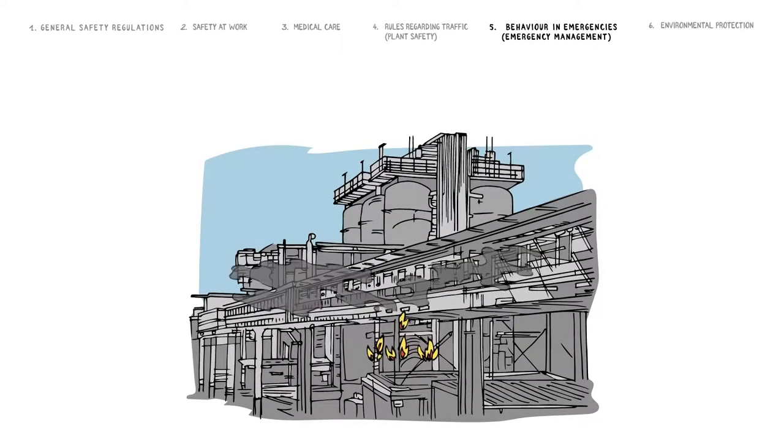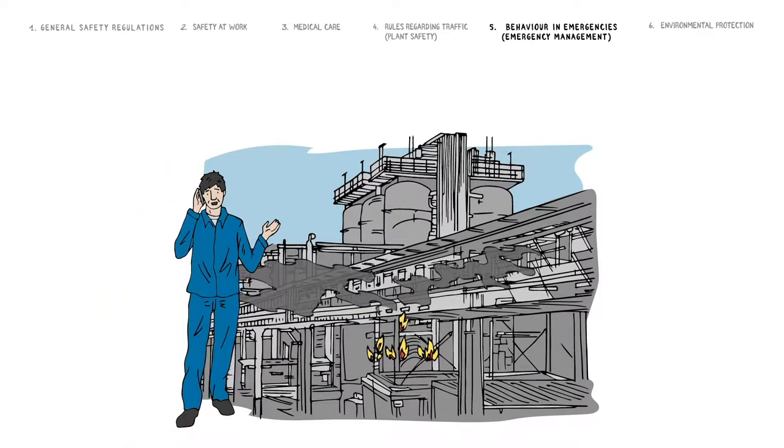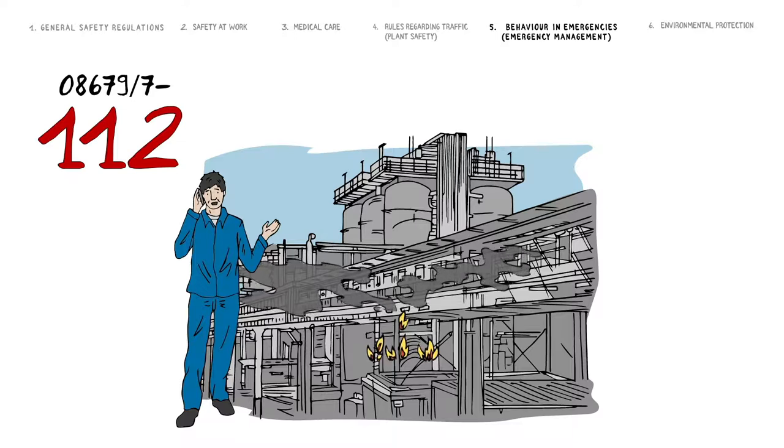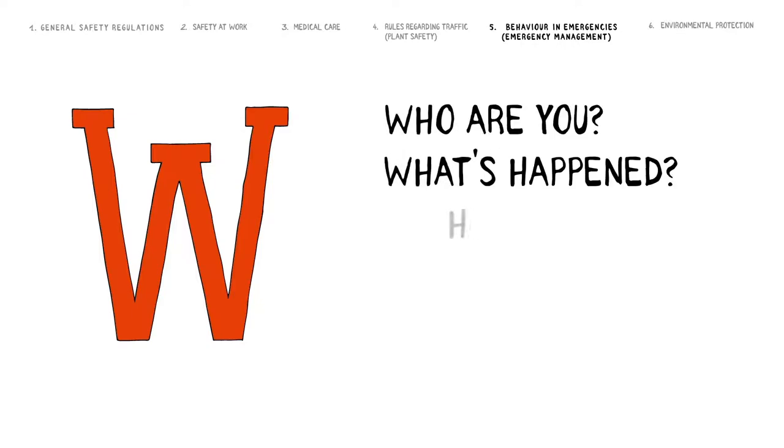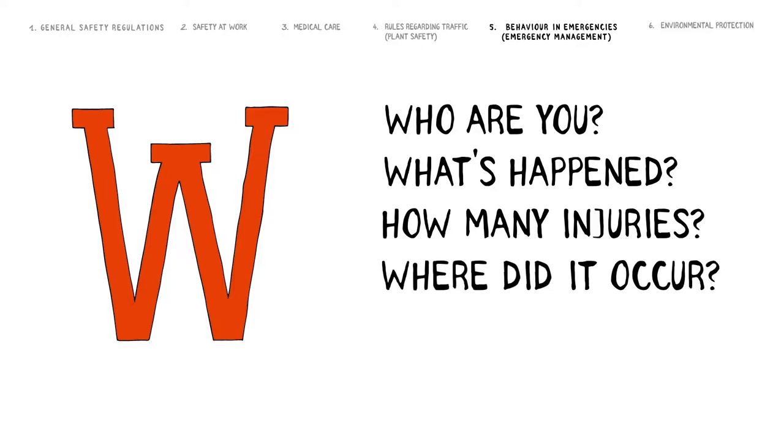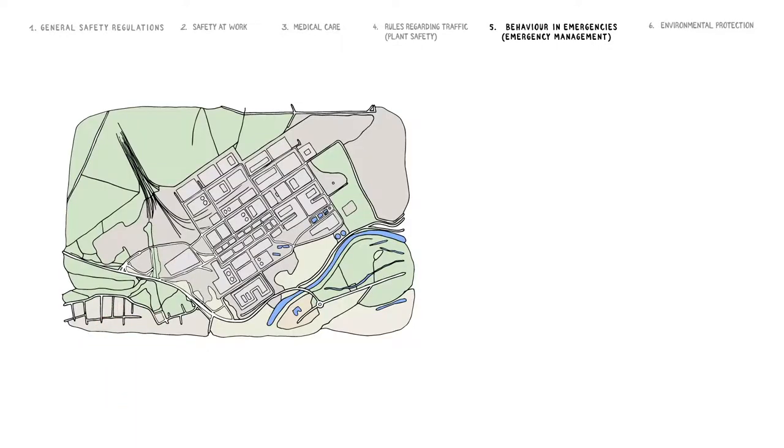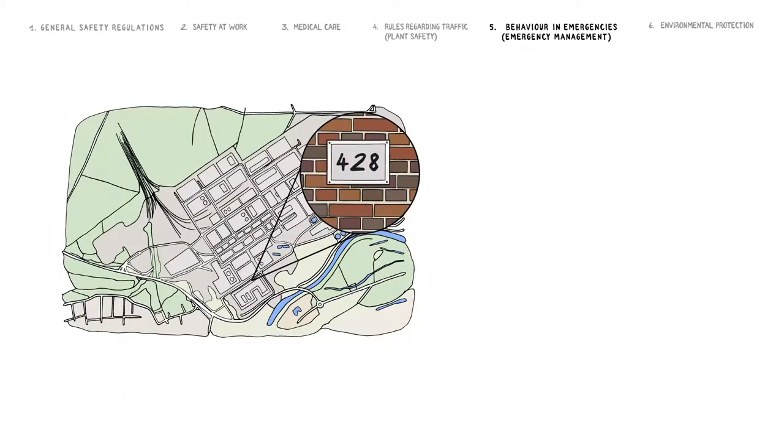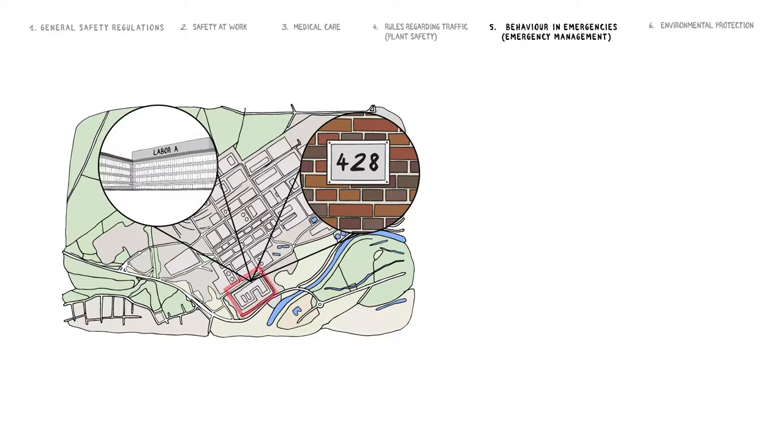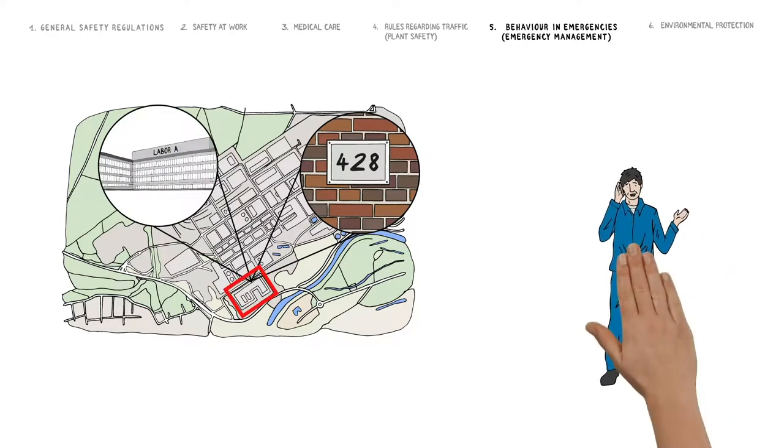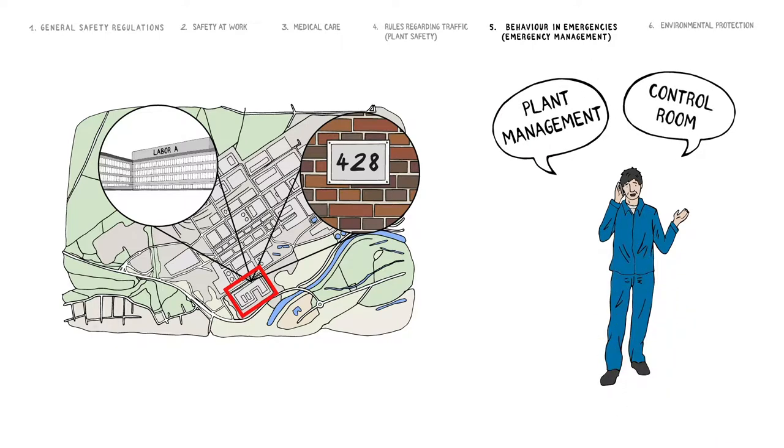During this call, bear in mind the five key points: Who are you? What's happened? How many injured persons are there? Where has the incident occurred? To gather as much precise information as possible, please specify the building number, the building unit, and the plant unit. Wait for any further questions. Also inform site management or the control room about the hazardous situation.